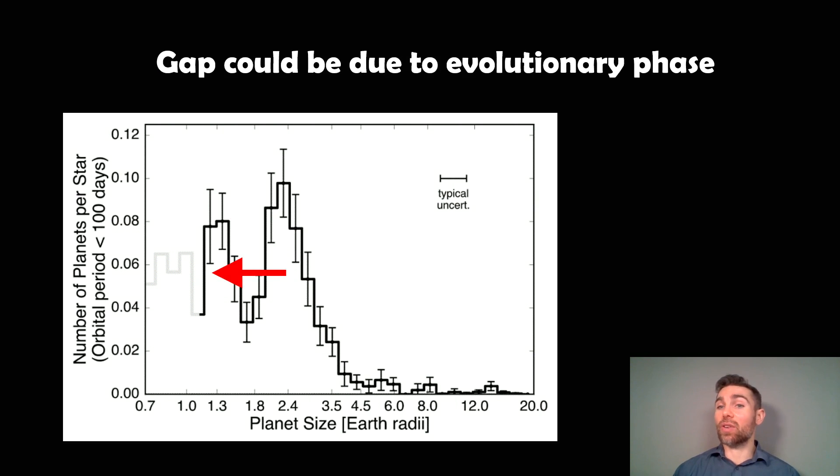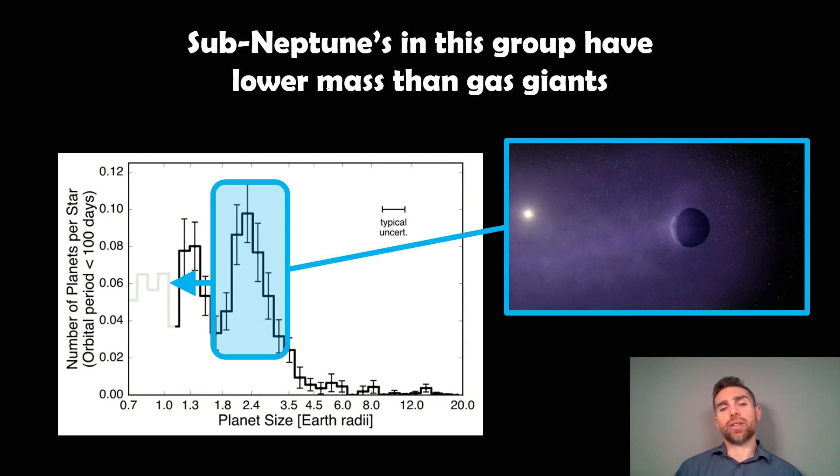Well, it could be down to an evolutionary phase. So it could be that the larger group actually is evolving into the smaller group. And where the valley is, that central bit where there's a lack of planets, it doesn't spend a lot of time there. So when we actually look for planets in space, you've only got a short period of time to discover those ones in that group there. So we're going to naturally detect less of those than in the other two groups, where there's likely going to be more of them spending more time. So what's happening to then make one evolve into the other?